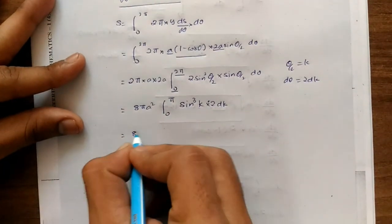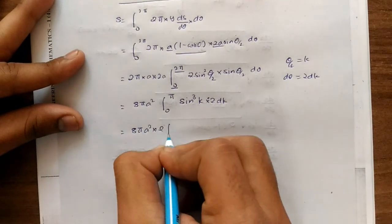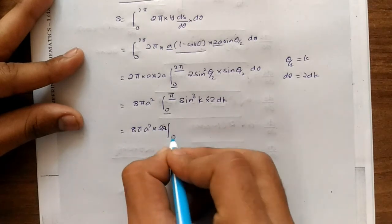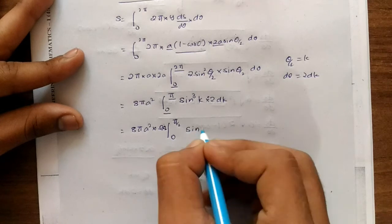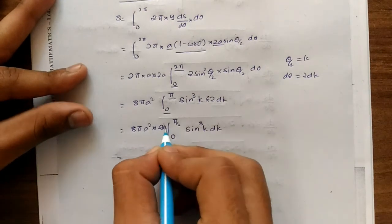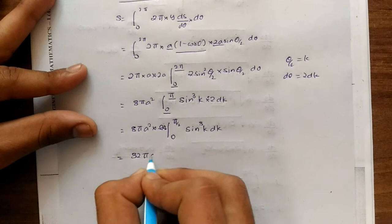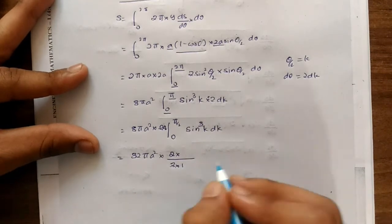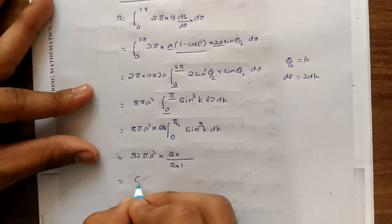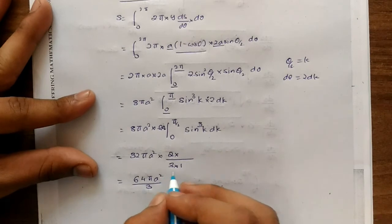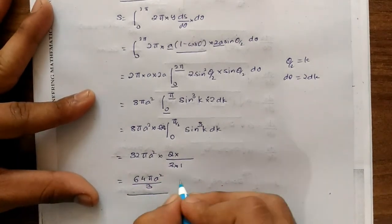The value becomes 8πa² and the 2 comes out. And again, if we want to integrate from 0 to π/2, we take one more 2 outside, giving from 0 to π/2 of sin³k dk. So 8, 16, 32 — 32πa² times the reduction formula result. Since the power is 3 (odd), we write 2/(3×1). So our answer is 64πa²/3. Hence the surface area of a cycloid is 64πa²/3 units.